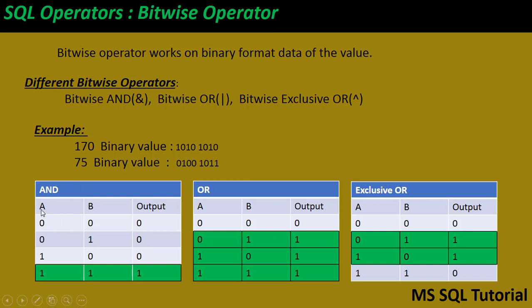For bitwise AND, if A is zero and B is zero, the result is zero. The result is one only when both values are one and one. I've highlighted those in green. The bitwise AND operator performs a logical AND on each bit of the two values, meaning both bits from A and B must be one to get a result of one; otherwise the result is zero.